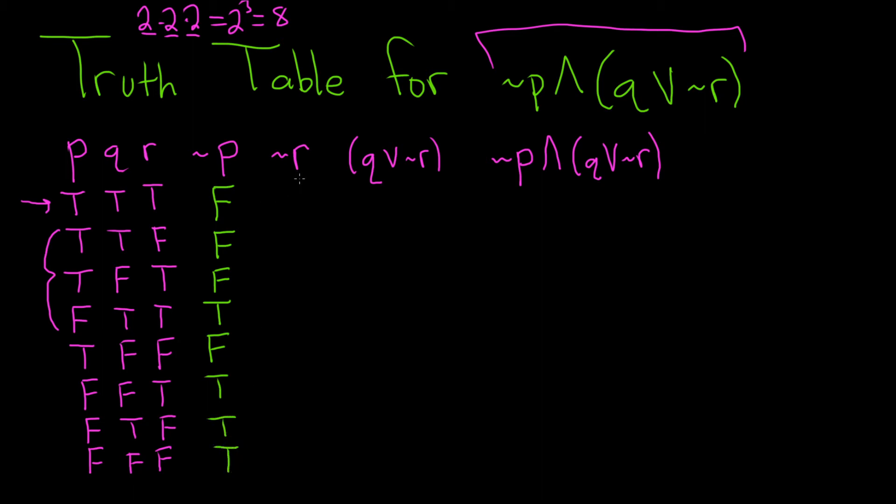For not R, we do the same thing. We look at the column that has the truth values for R and we just negate each truth value. So true becomes false, then this one becomes true, and then false, false, true, false. And the last two are false, so they will become true.